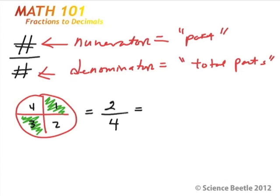Another way of doing this: if we reduce by two, we know that two goes into two one time, and two goes into four two times. So this reduces to one-half. But what do we do now? Let's learn how to convert this one-half into a decimal.